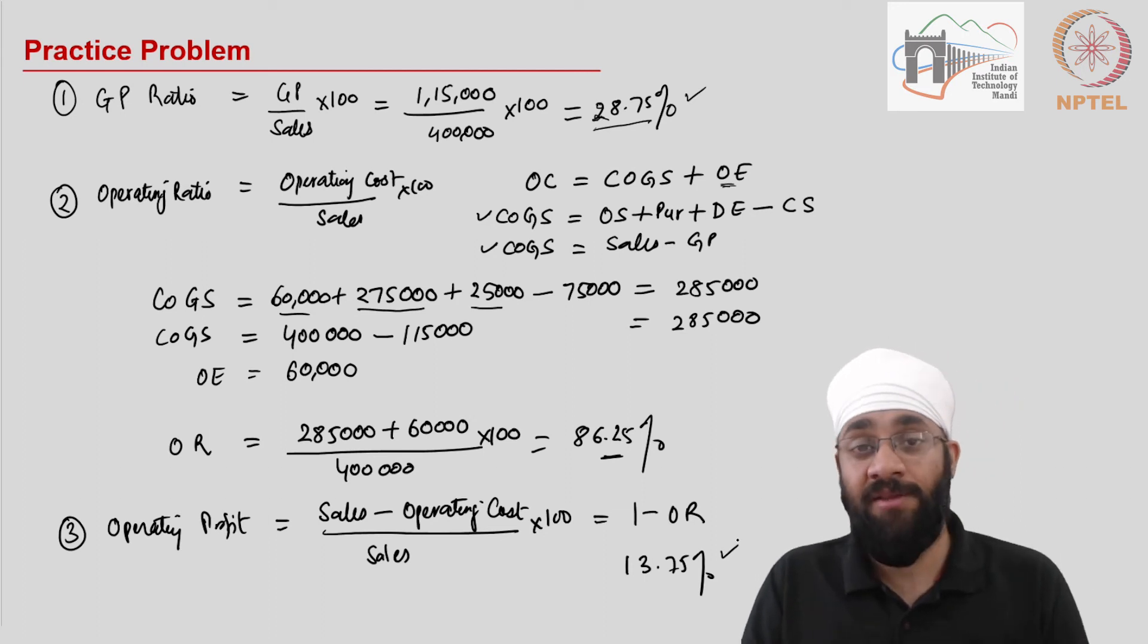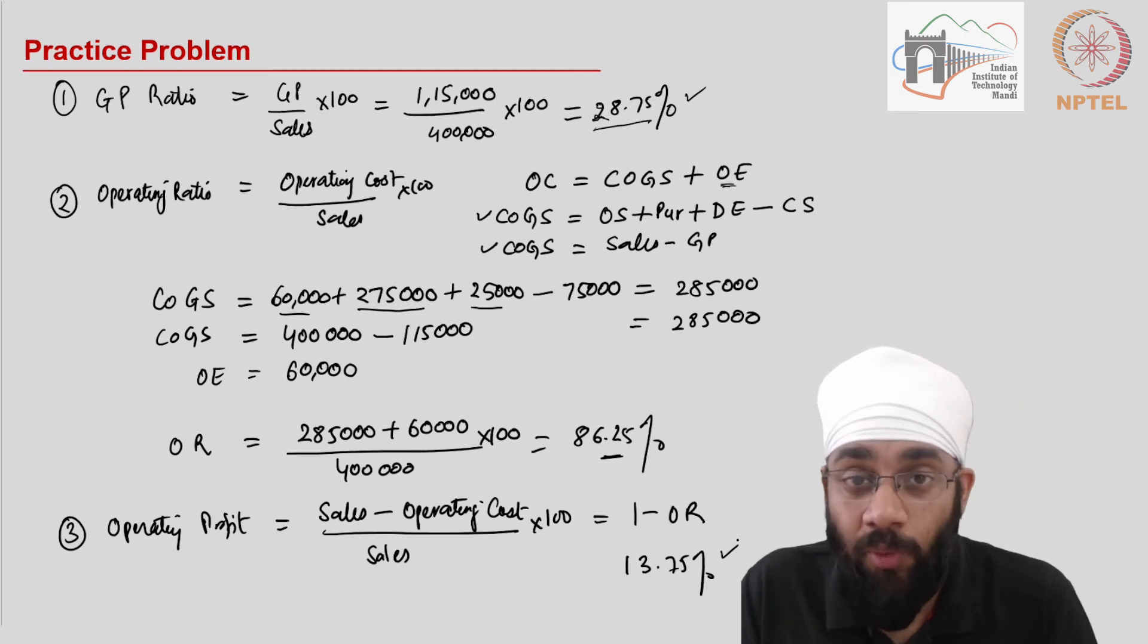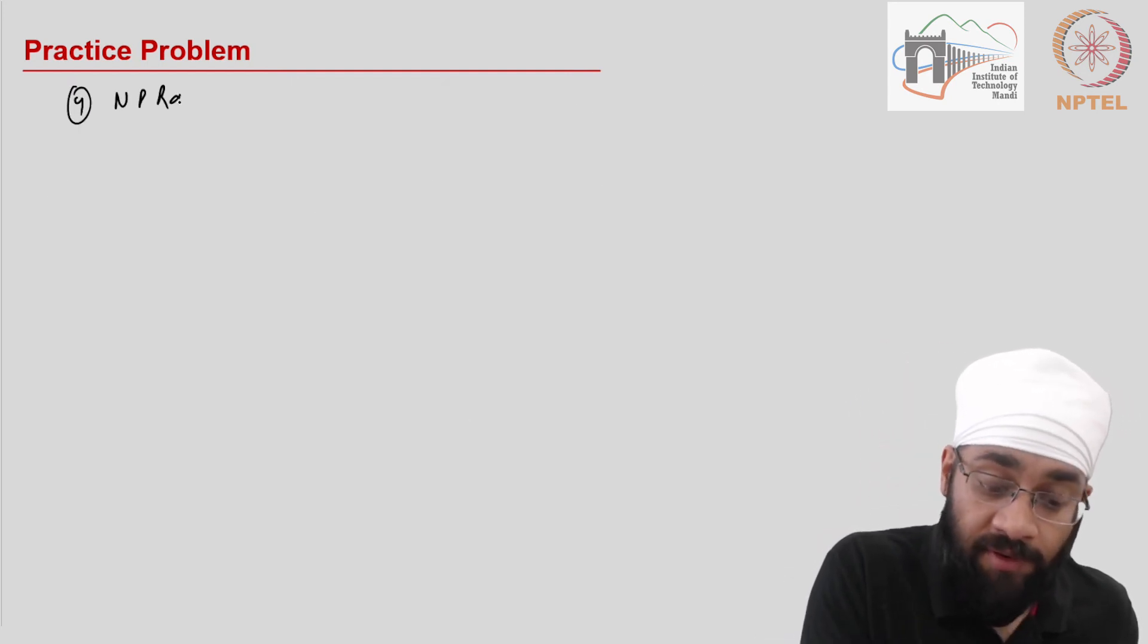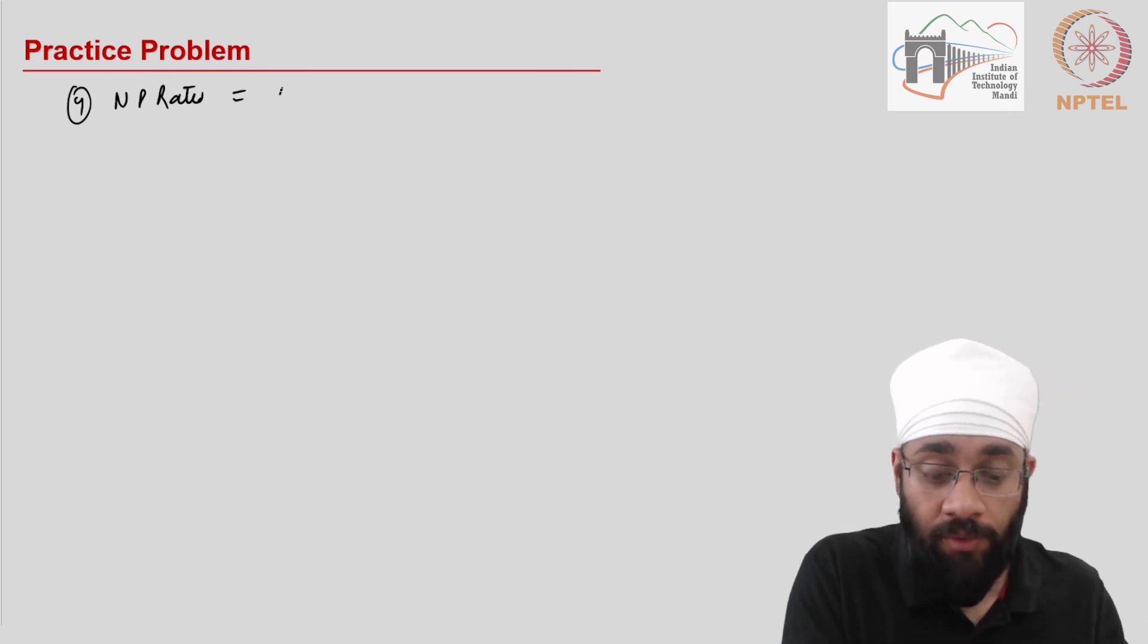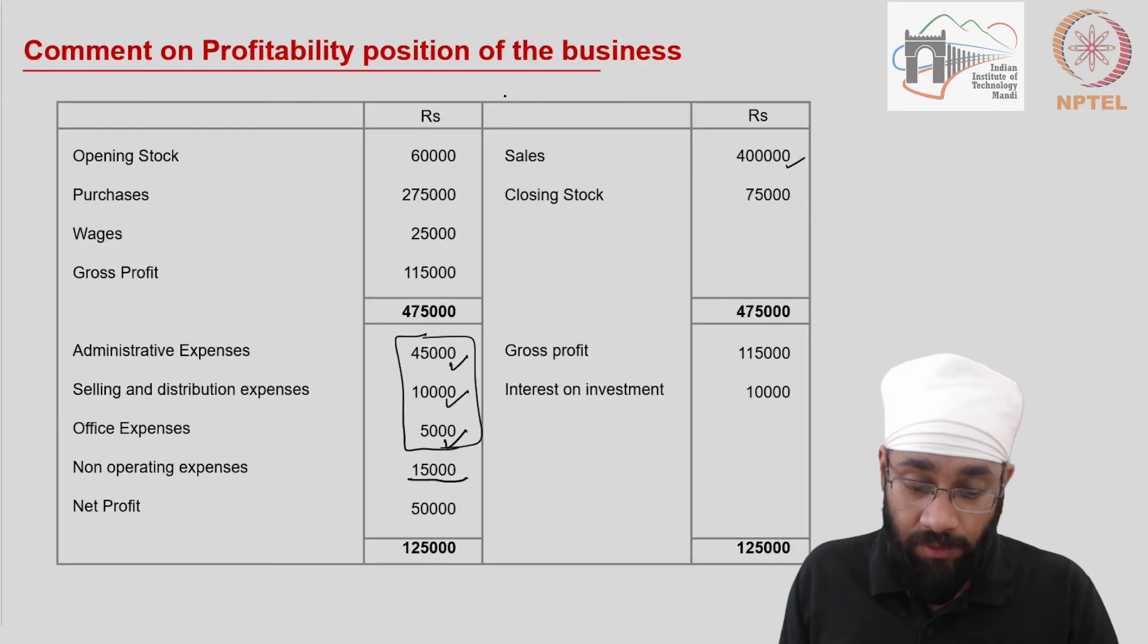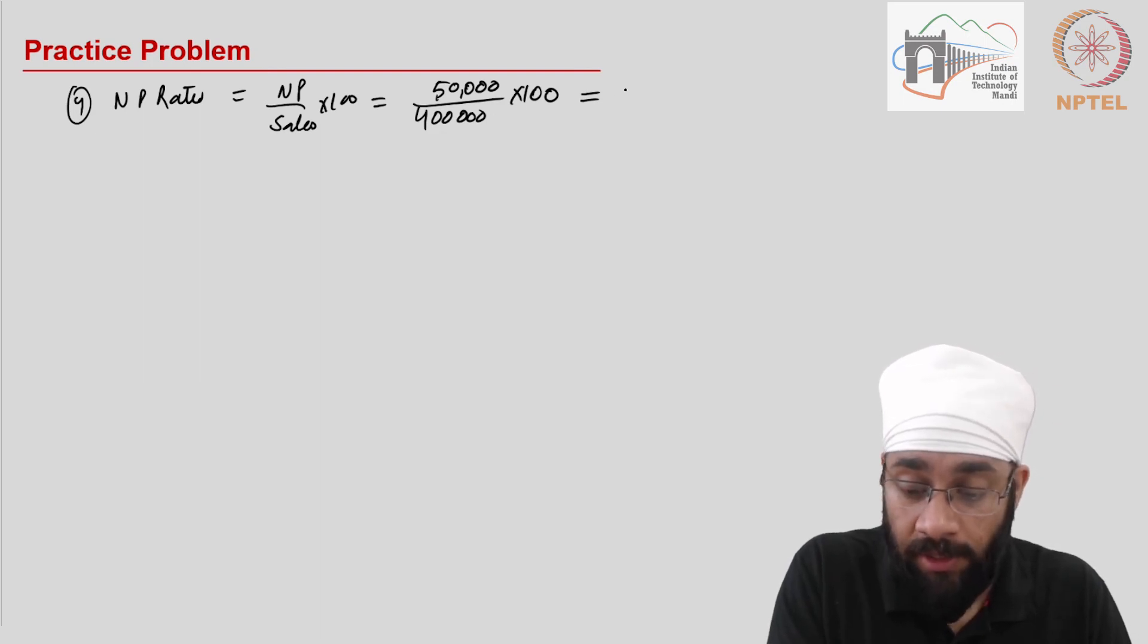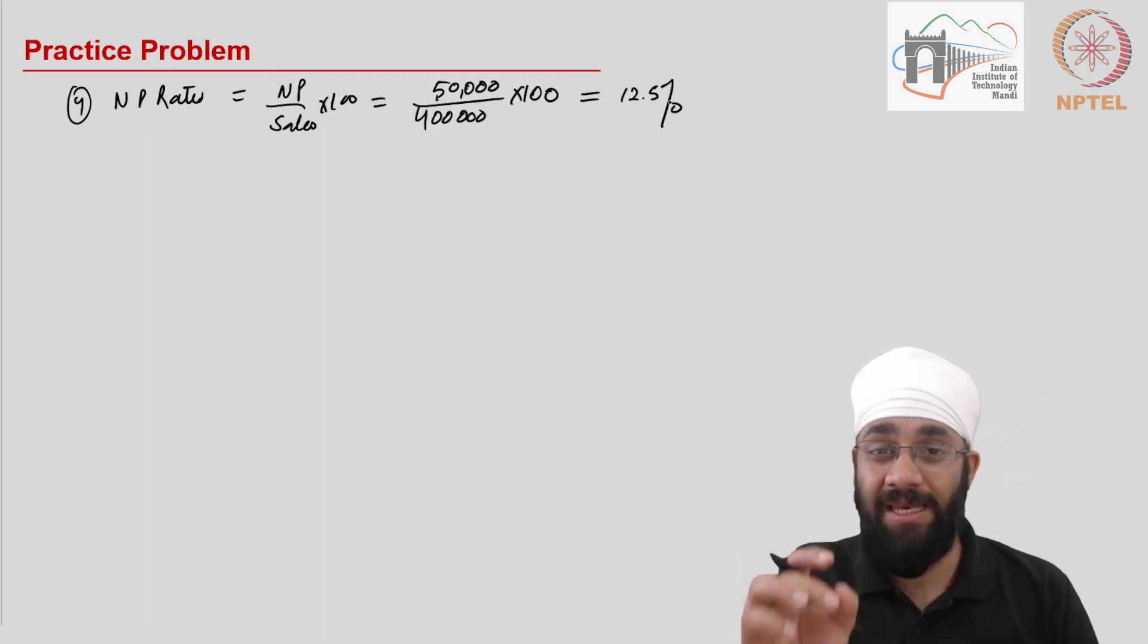Our operating profit is 13.75%. The gross profit was 28%. The operating profit is 13.75%. Let's look at what our net profit ratio is. Net profit ratio is equal to net profit divided by sales into 100 of course. Sales is 400,000. Net profit is 50,000. So 50,000 divided by 4 lakhs into 100. It comes out to be 12.5%. 12.5% is the net profit ratio.